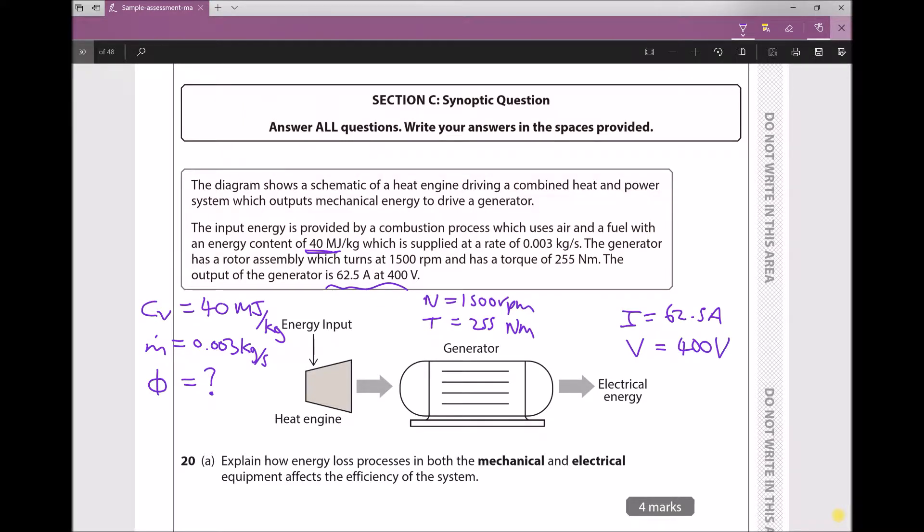Now the important thing to note is that if this whole process was 100% efficient, then all of the energy released from the fuel when it's combusted on the left would be converted to electrical energy on the right. But there's a number of possible sources of losses in this process. The heat engine may lose some heat energy, or not all of the energy from the fuel might be recovered. We might end up with partial combustion and some fuel may not be combusted properly, so we won't necessarily convert all of that heat energy to electricity.